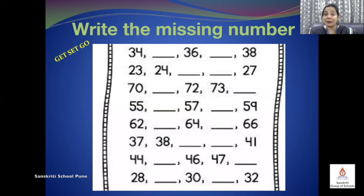Write the missing number. What do we do in missing numbers? We write the numbers in the blank spaces. Now when we take the first question, the number is 34. And the number that comes after 34 is 35. So in the blank space, we are supposed to write 35. Then it is 36, and the number that comes after 36 is 37. Very good. And then it is written 38. In the same manner, we will do the rest of the questions.